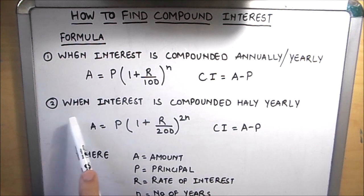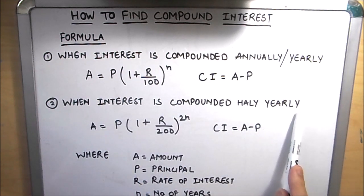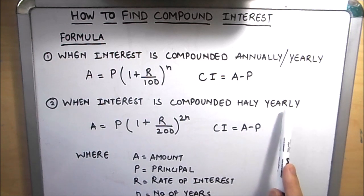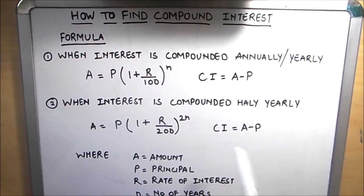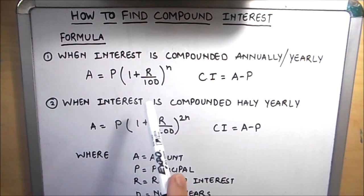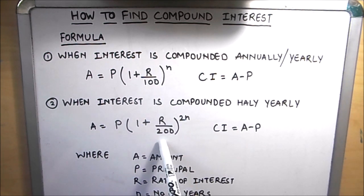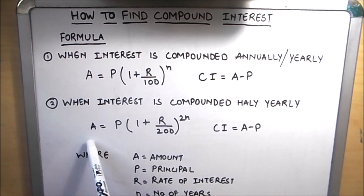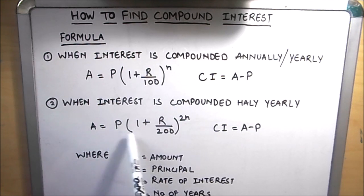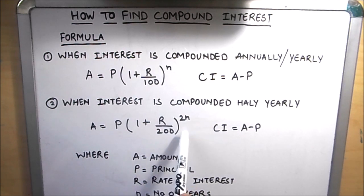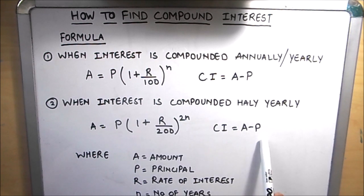The next formula is when the interest is compounded half yearly. Half yearly means there are two half years in one year, so n becomes 2n and the rate of interest becomes half, which is r over 2. So the formula changes to: A equals P times 1 plus r over 200, whole raised to power 2n. We then use Compound Interest equals Amount minus Principal.